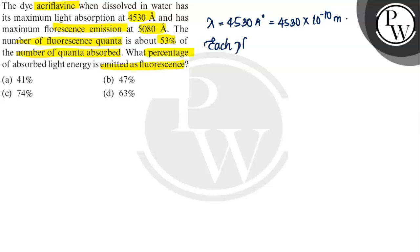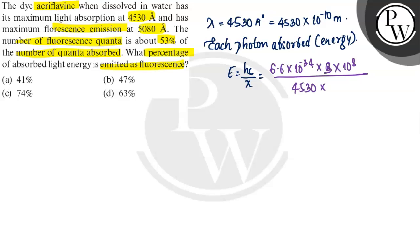Each photon absorbed, the energy is E equals hc by lambda. So here h value is 6.6 into 10 power minus 34, c value is 3 into 10 power 8, divided by lambda value 4530 into 10 power minus 10. This calculated value will be 4.39 into 10 power minus 19 joules.